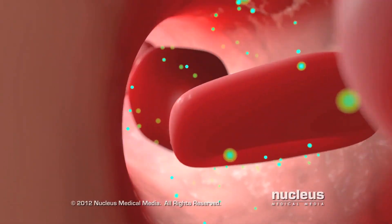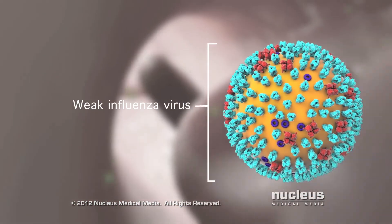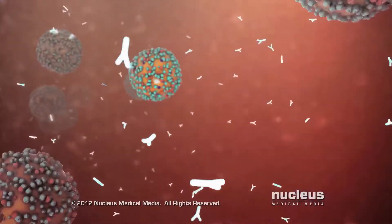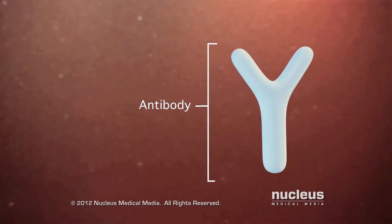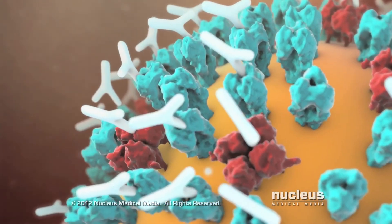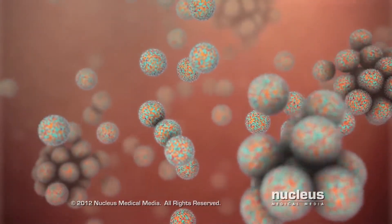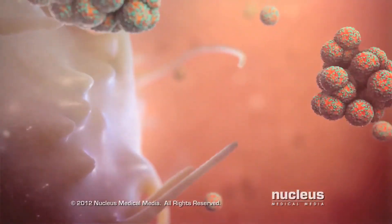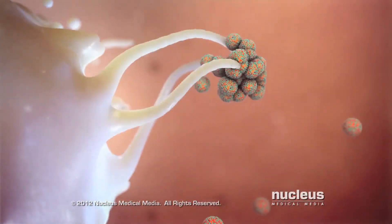The vaccine exposes your body to several types of the influenza virus that are too weak to cause infection, but just strong enough to stimulate an immune response. Within two weeks, cells in your immune system make markers called antibodies, which are specific for only the types of flu you were exposed to. The antibodies attach to each flu virus and prevent it from attaching to your cells. Antibodies are also able to attach to more than one flu virus, which causes viruses to clump together. Your immune system responds to signals from the antibodies by engulfing and destroying the clumps of viruses.